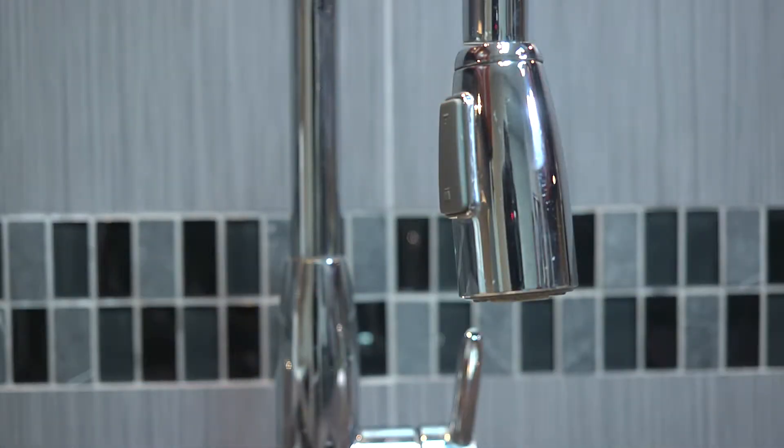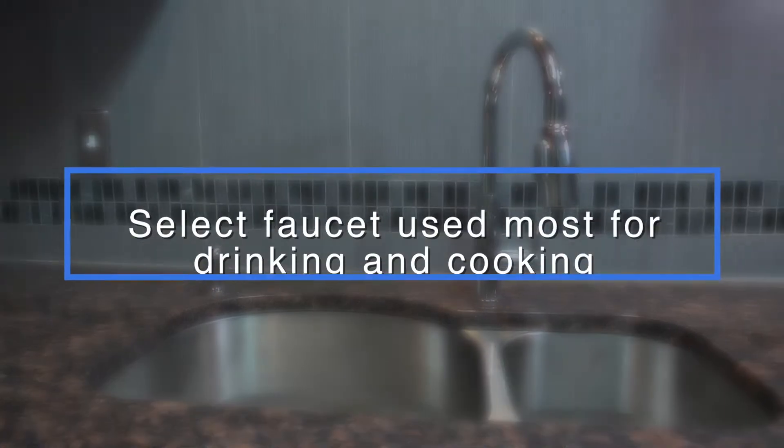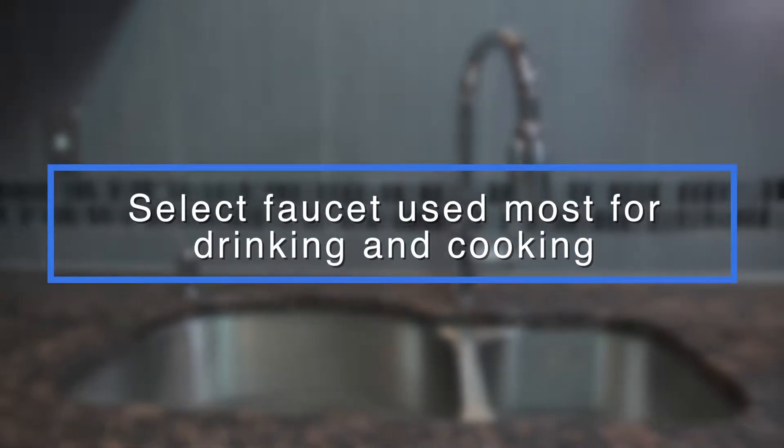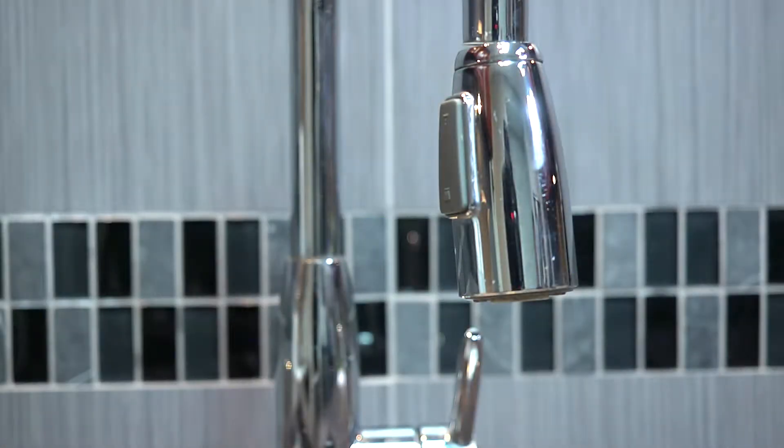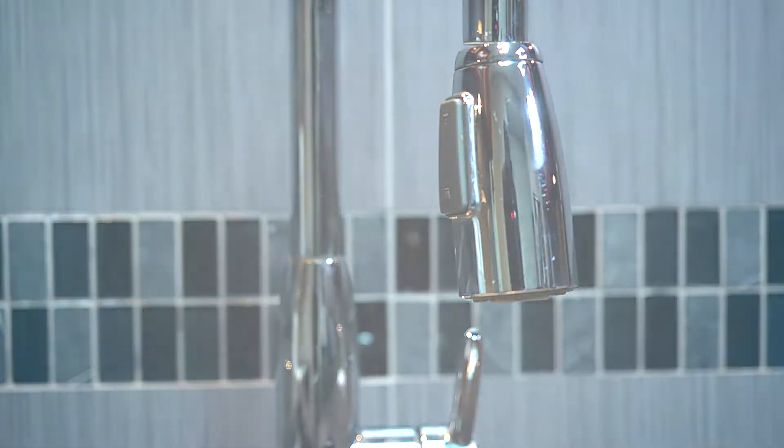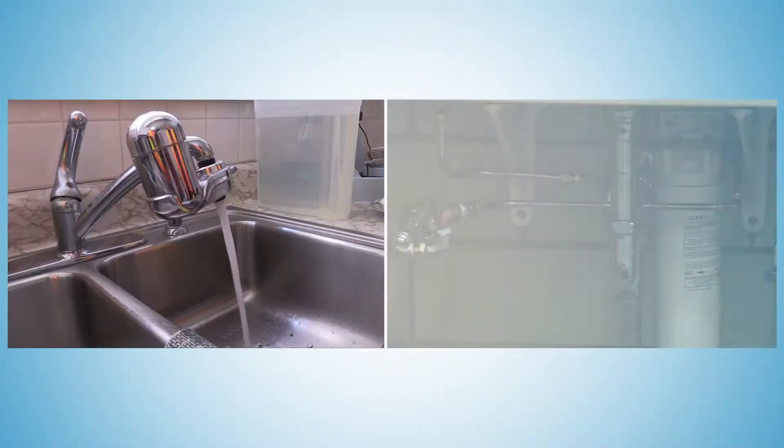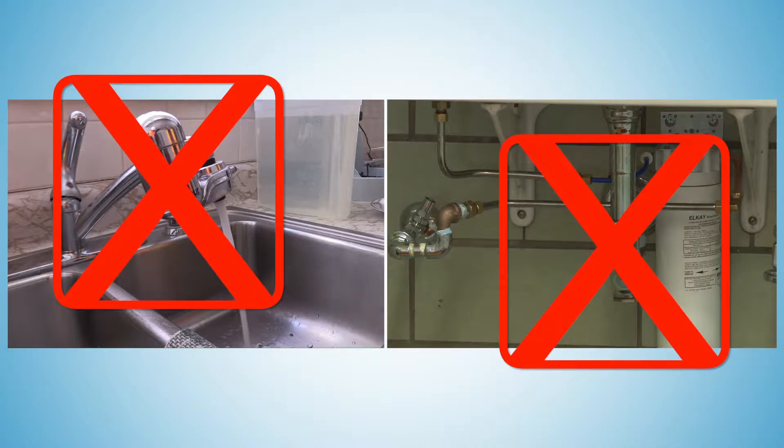Before you collect your water samples, select the faucet in your home you most often use for drinking and cooking. For most that's the kitchen faucet. Make sure there's no water filter on the faucet or under the sink, and do not use a faucet connected to any type of home water treatment system.